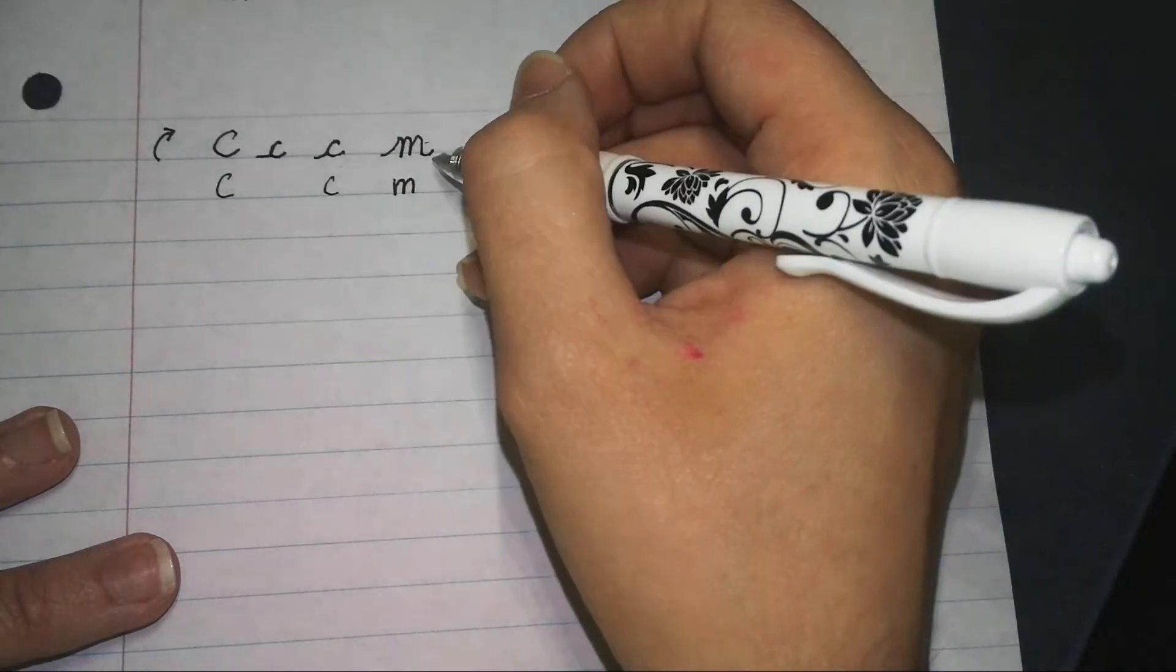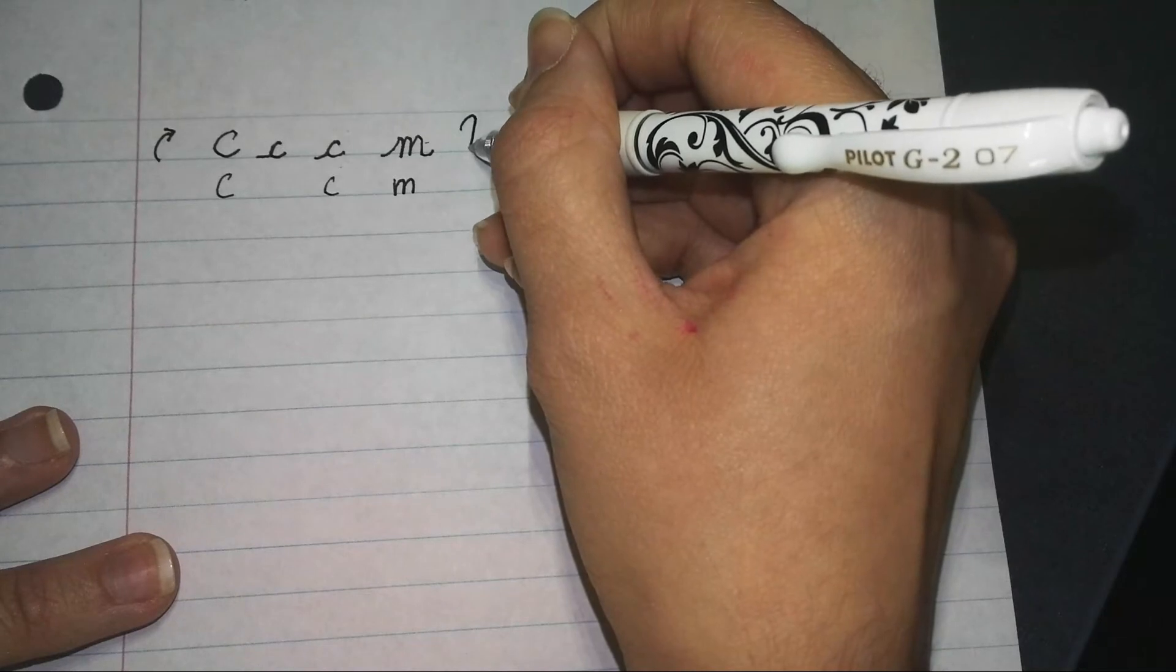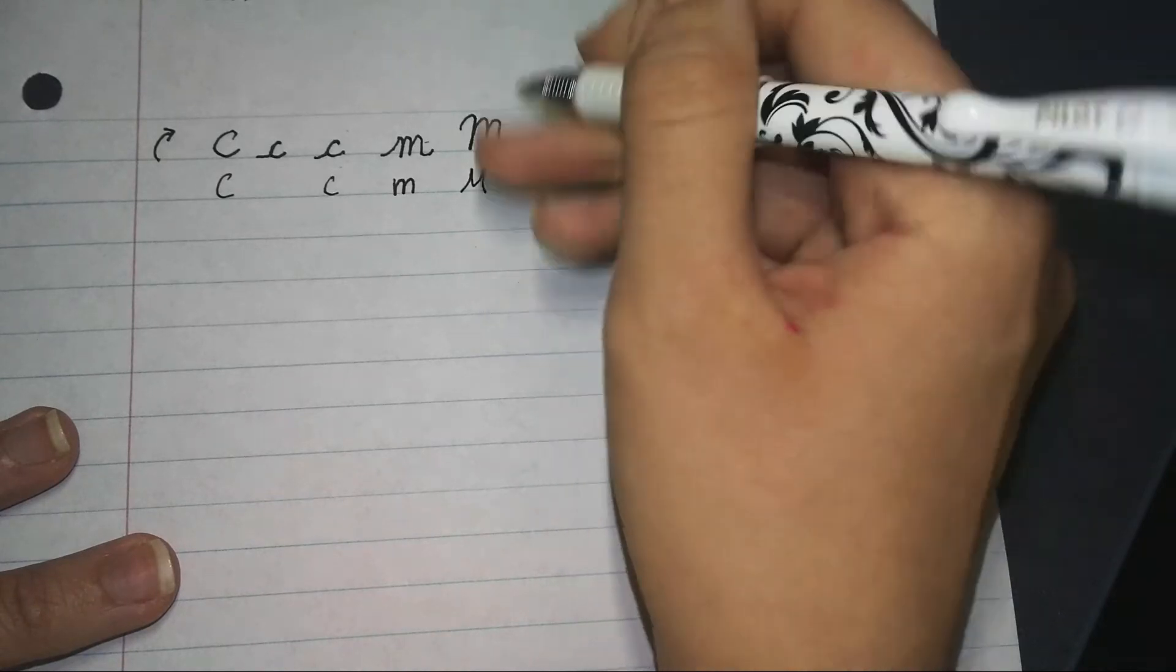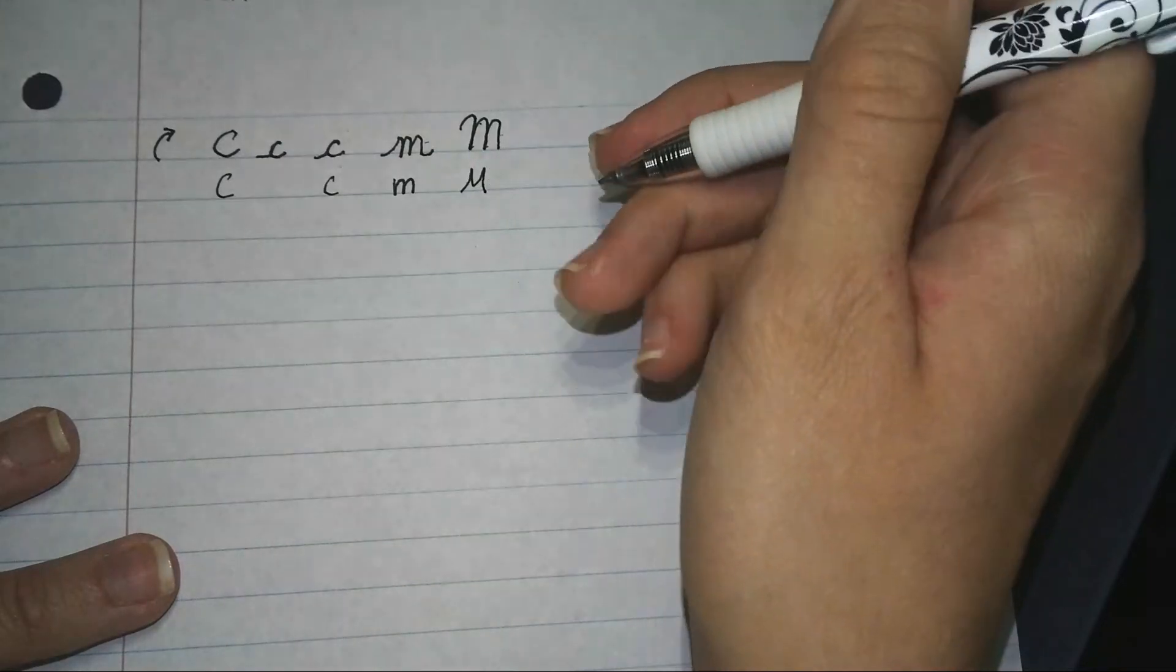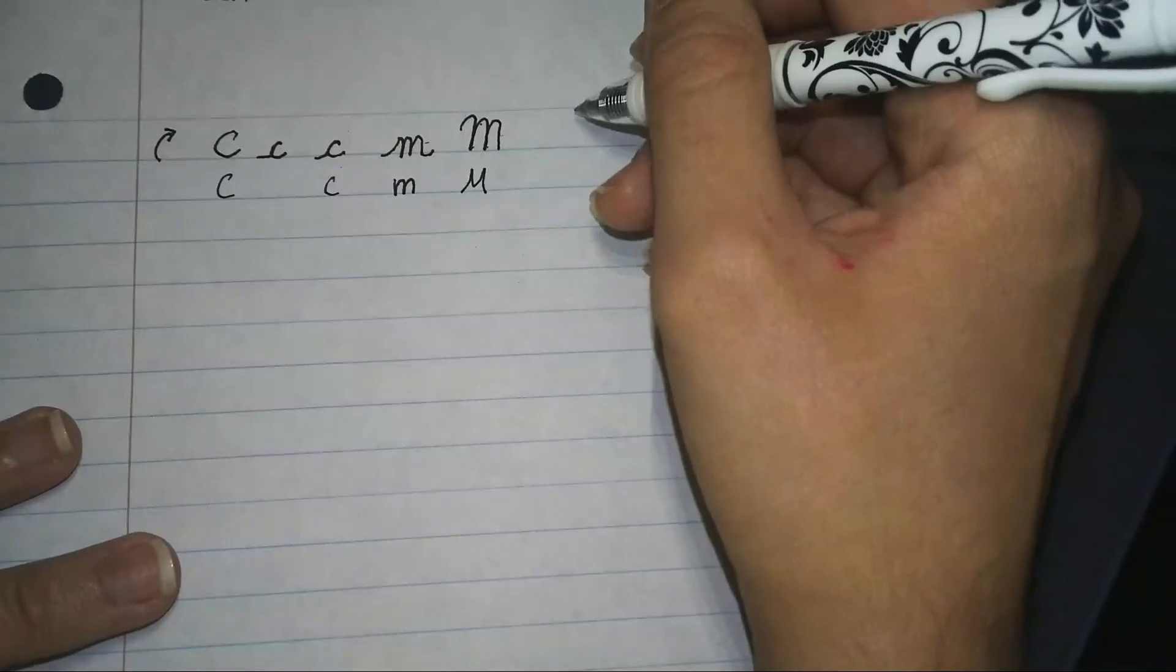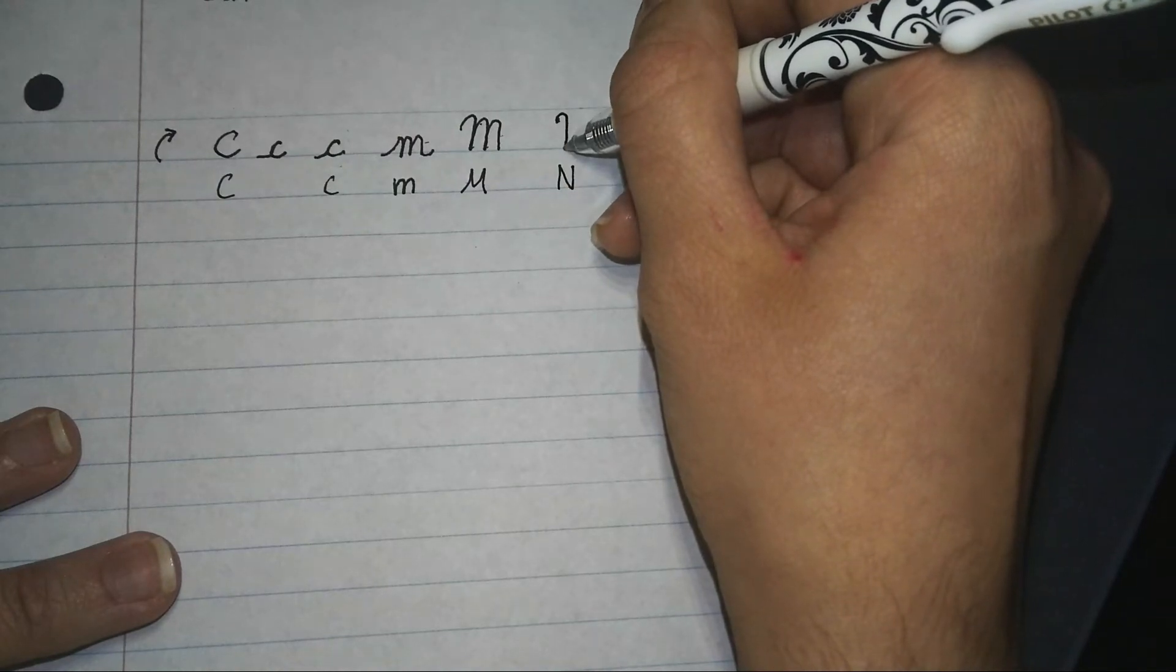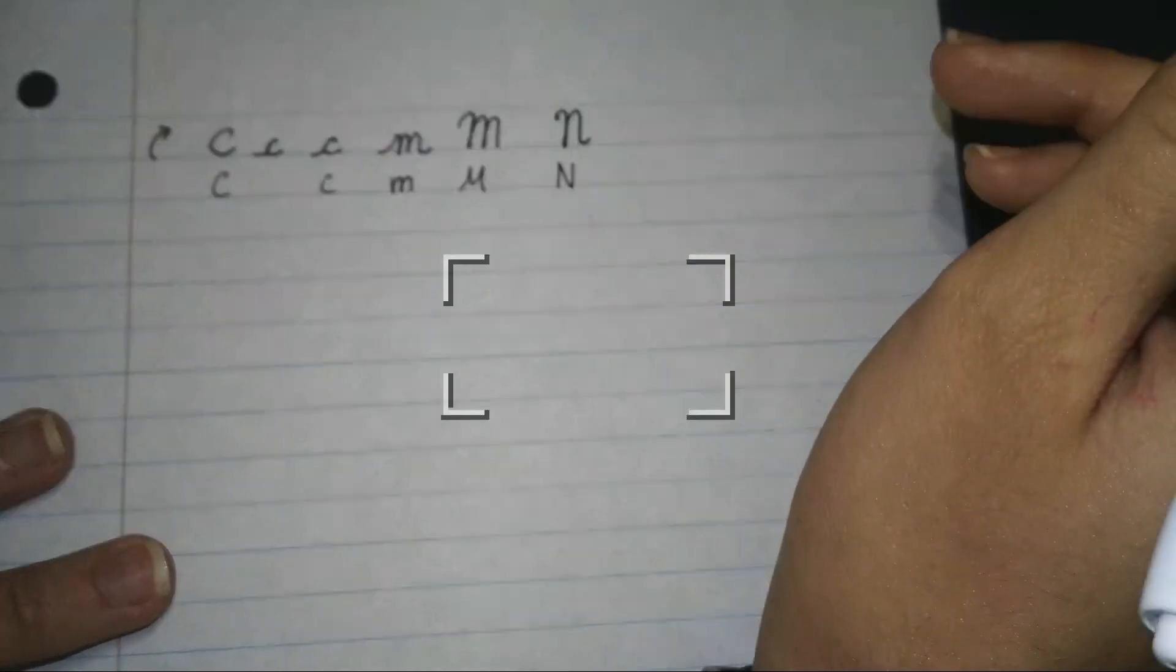A capital M looks more like what you're used to. You start with a hook, you come down up, down up, down, which looks like it's got the two points on a print M. N is pretty standard. Again for a capital N you start with a hook, come down in a straight line up, down and then you move into your next letter, almost a little bit like what a lowercase N looks like.